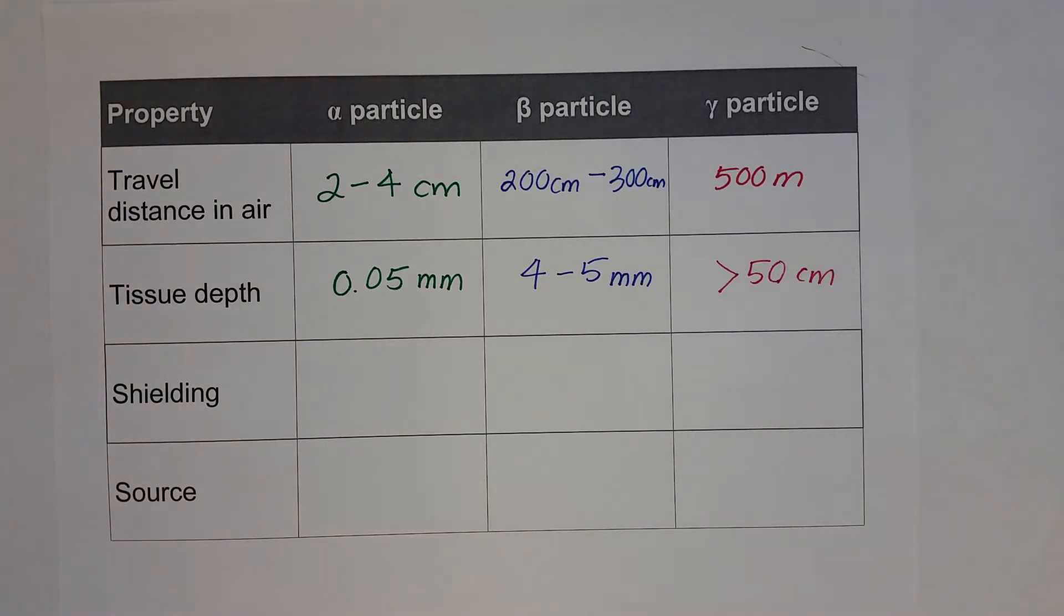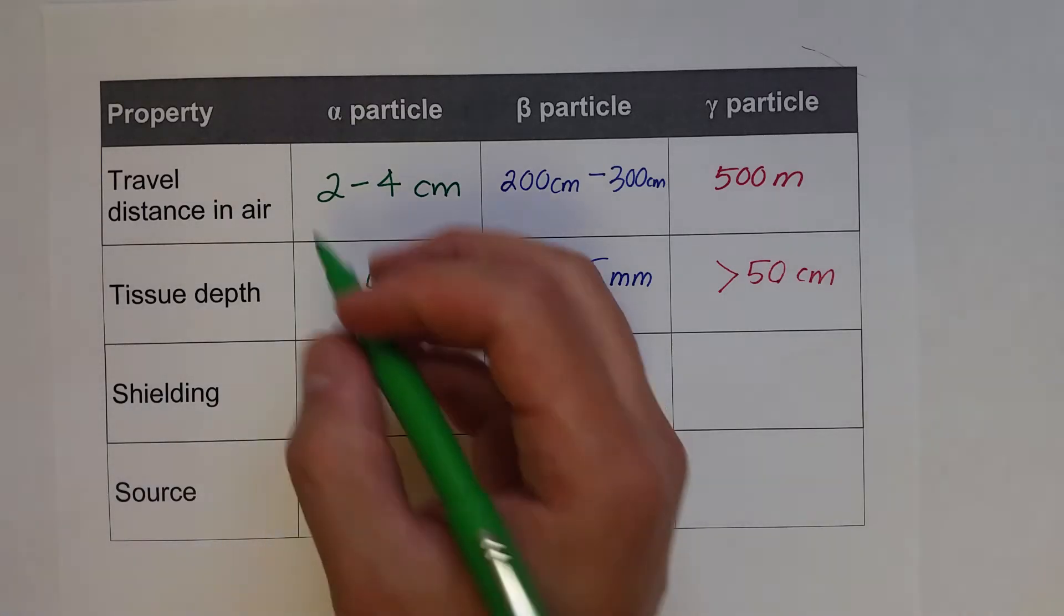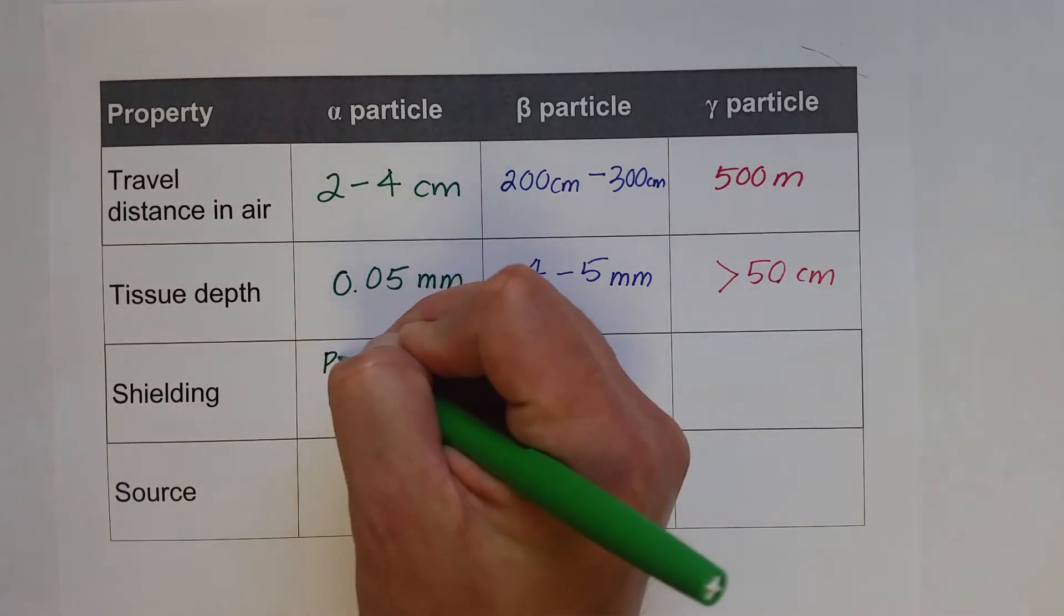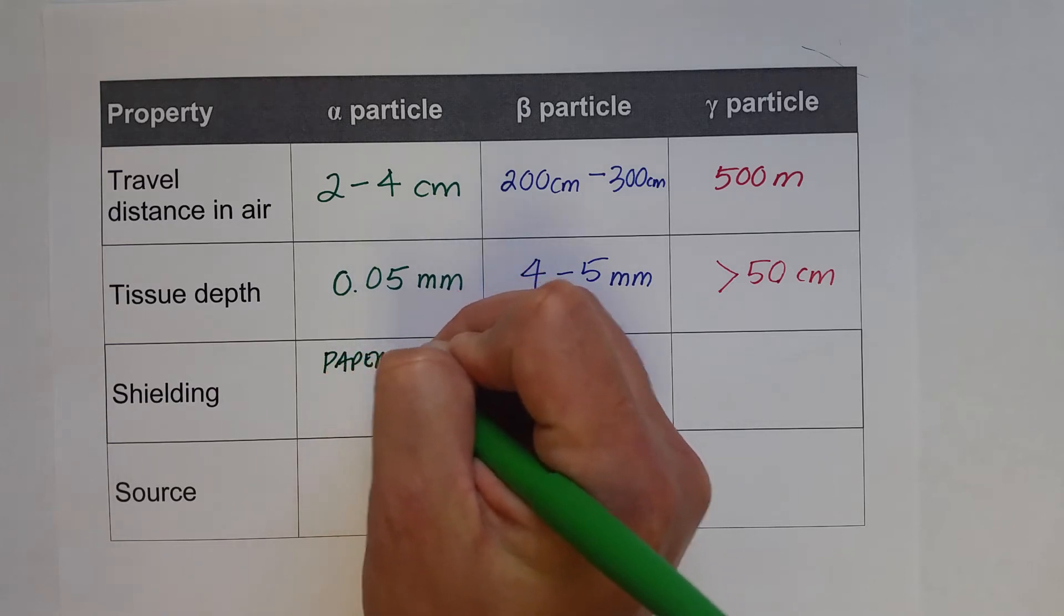And then, of course, we need the least amount of shielding for the alpha particles, and the most for gamma rays. The alpha particle can be stopped by using just thick sheets of paper or clothing.